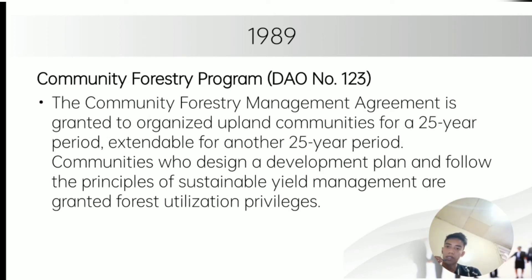Also in 1989, the Community Forestry Program granted community forestry management agreements to organized upland communities for a 25-year period, extendable for another 25 years. Communities that design a development plan and follow principles of sustainable yield management are granted forest utilization privileges. Community forestry management is a powerful paradigm that arose from the failure of state forest governance to assure long-term viability of forest resources and equal access to and benefits from them.